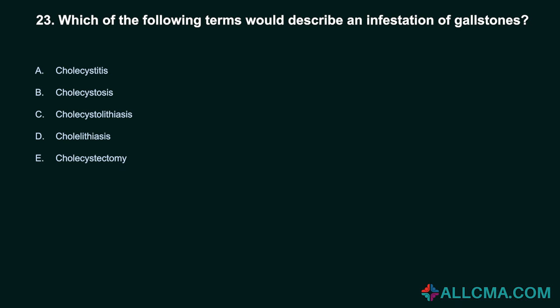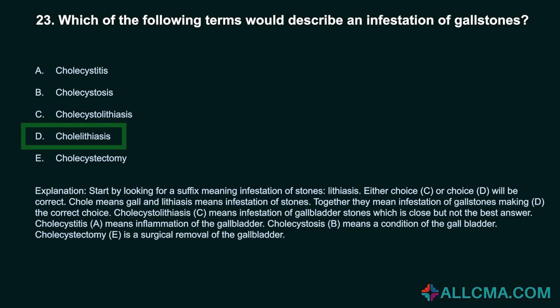Question 23: Which term describes an infestation of gallstones? a) cholecystitis, b) cholecystosis, c) cholecystolithiasis, d) cholelithiasis, e) cholecystectomy. Correct answer: D, cholelithiasis. Look for the suffix -lithiasis meaning infestation of stones. Chole- means gall and -lithiasis means infestation of stones, together meaning infestation of gallstones. Cholecystolithiasis means infestation of gallbladder stones, which is close but not the best answer. Cholecystitis means inflammation of the gallbladder. Cholecystosis means a condition of the gallbladder. Cholecystectomy is surgical removal of the gallbladder.